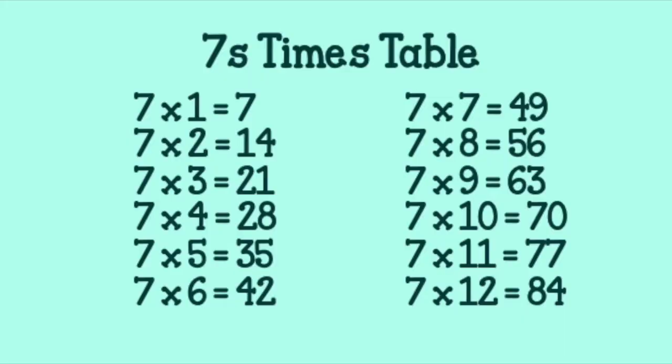Seven, fourteen, twenty-one, twenty-eight, thirty-five, forty-two, and forty-nine, fifty-six, and sixty-three, seventy, seventy-seven, eighty-four. Seven, fourteen, twenty-one, twenty-eight, thirty-five, forty-two, and forty-nine, fifty-six, and sixty-three, seventy, seventy-seven, eighty-four.